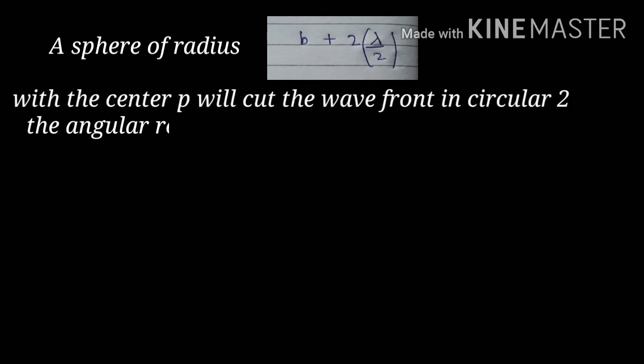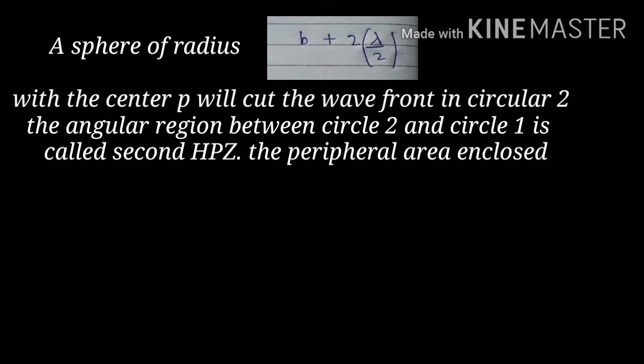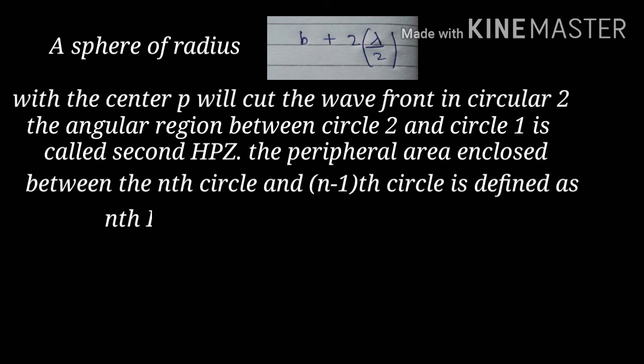A sphere of radius R plus 2 lambda by 2 with center at P will cut the wavefront in a circular circle 2. The angular region between circle 2 and circle 1 is called second half period zone. The peripheral area enclosed between the nth circle and the n-1 circle is defined as nth half period zone.